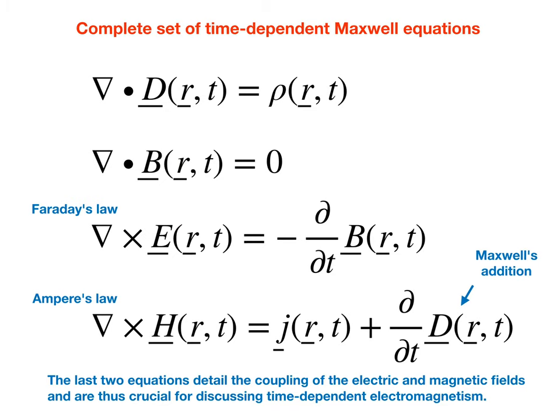In order to describe time-dependent electromagnetic phenomena such as the induction of an electric field by a time-changing magnetic field, or the induction of a magnetic field by a time-changing electric field, requires the complete set of time-dependent Maxwell equations to be considered. The four Maxwell equations are listed here in their most general form, and in addition to the space dependence, all four electromagnetic fields now have a time-dependence. Also, the charge density rho and the current density j have a time-dependence.